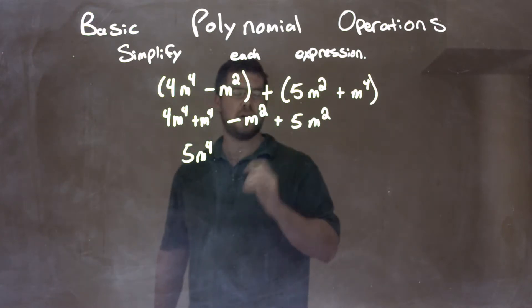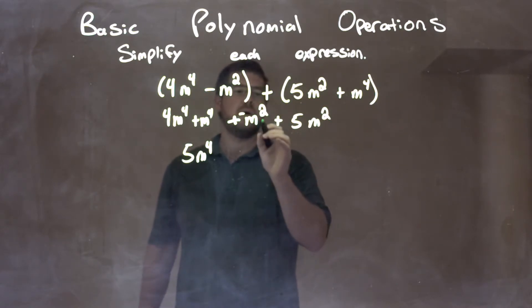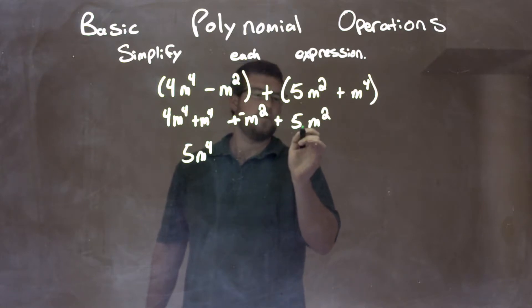Then we have a negative m squared, and I like to see this as plus a negative. So subtracting m squared, we're adding a negative. That's the way I like to see it. Well, negative m squared plus 5m squared is a positive 4m squared.